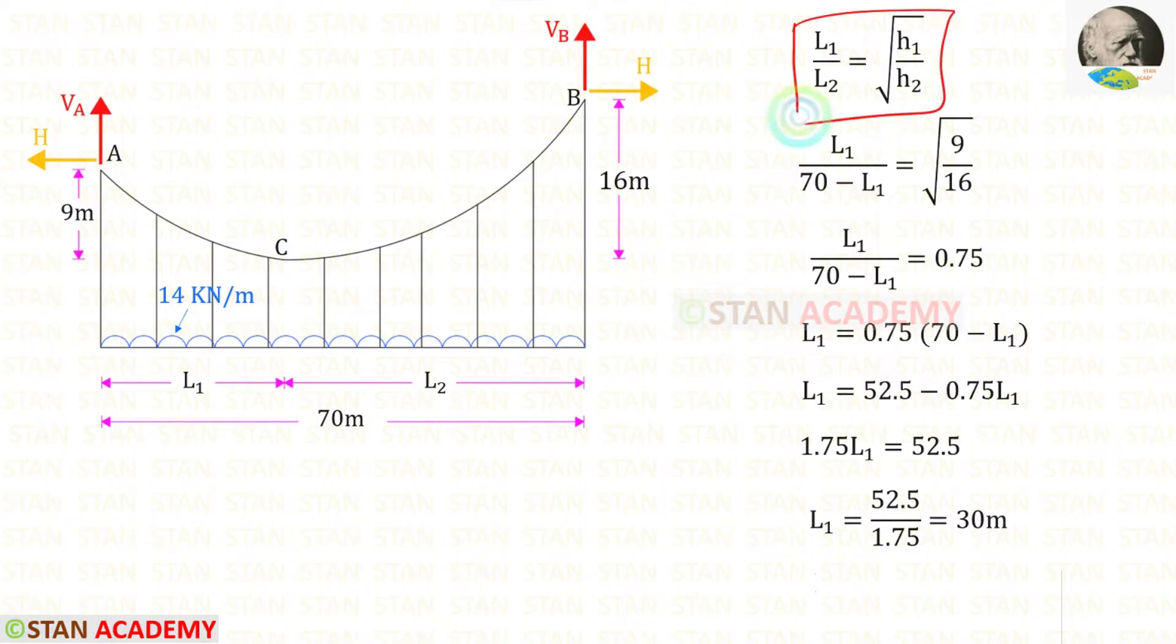We can use this expression and find L1 and L2. We know that L2 is 70 minus L1. H1 is 9 and H2 is 16. Root 9 is 3. Root 16 is 4. 3 upon 4 we will get 0.75.